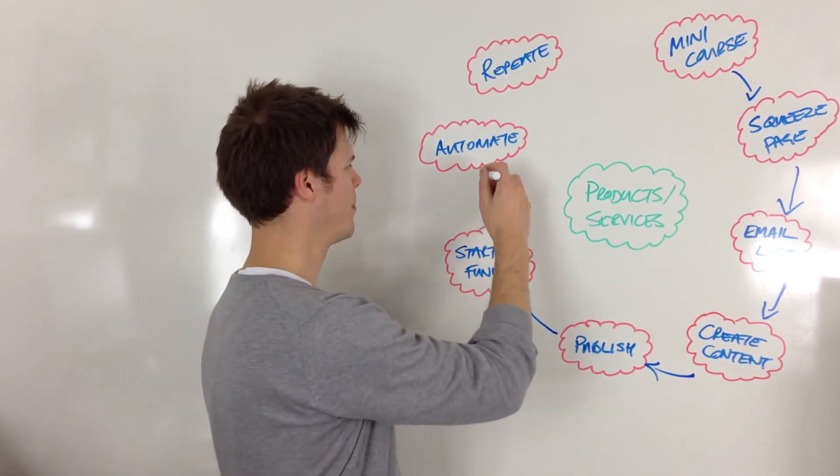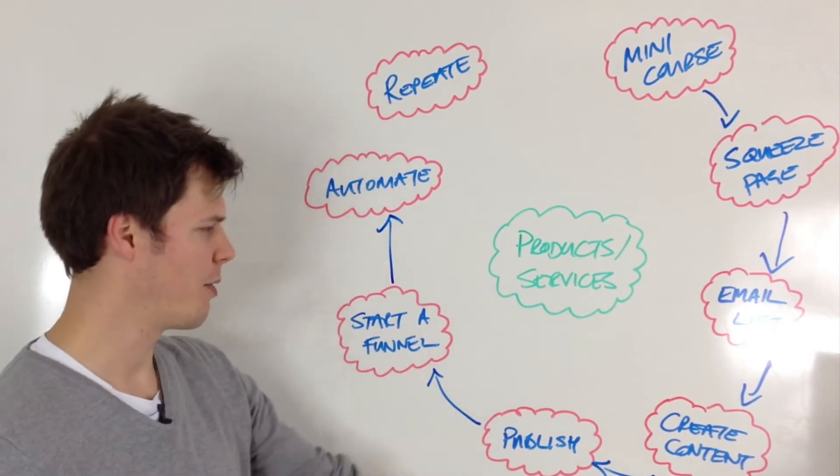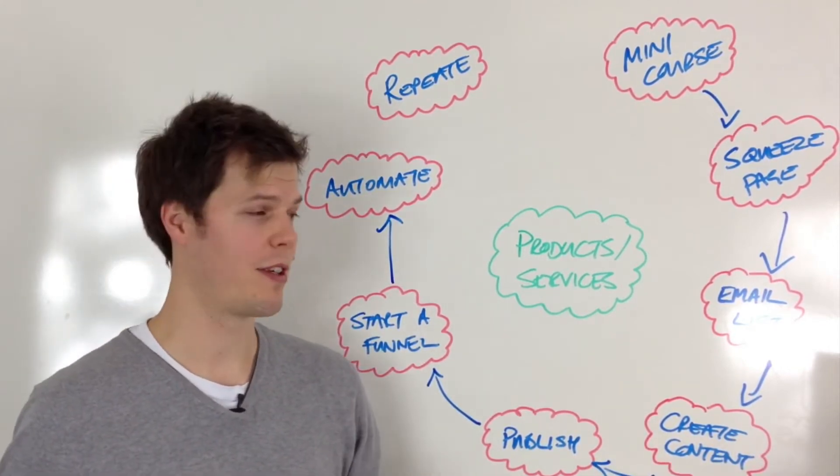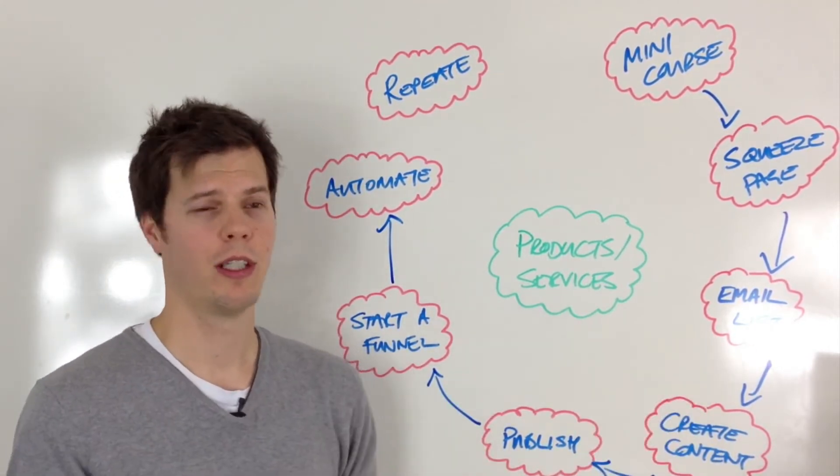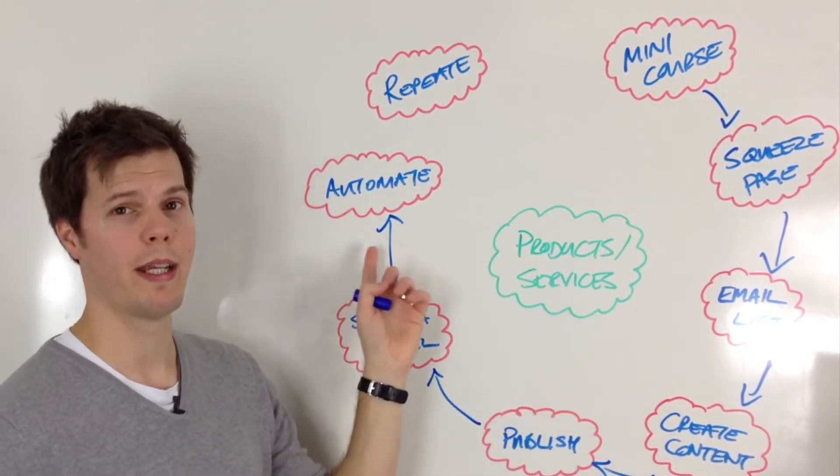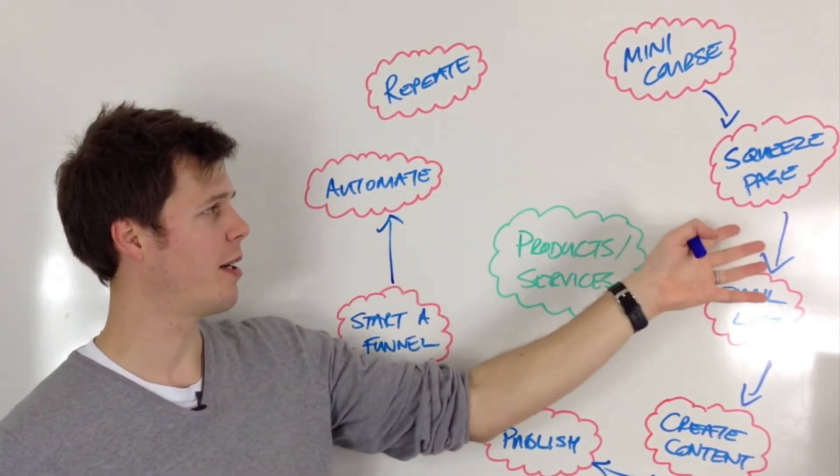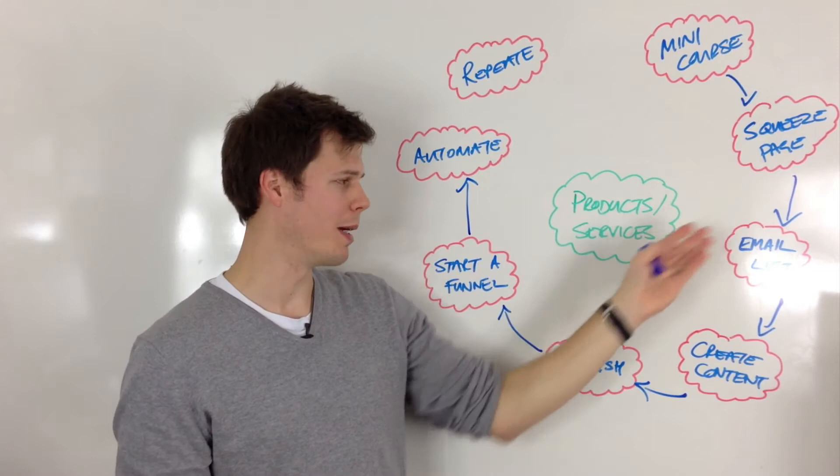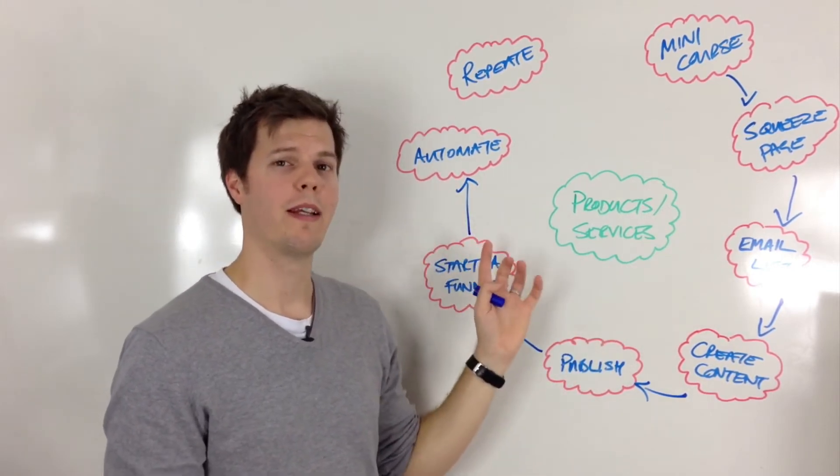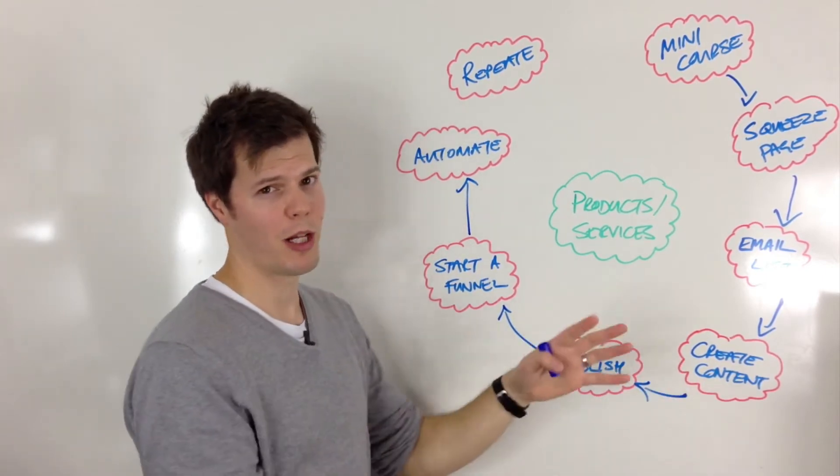Automate. Automate is the next part. Once you create your mini course and you create some content and maybe your mini course is seven videos long, once you create the process, once you put the content out there, you want to automate the process of delivering that. If someone signs up to your email list, they join your email list, you then want to automate the delivery of your content. And this can go on for a much, much longer time.